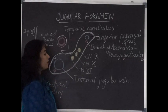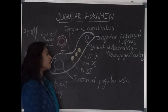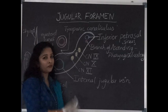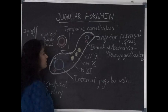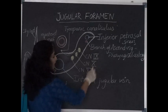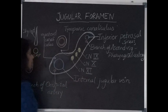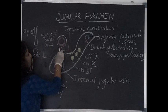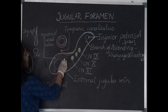From the intermediate compartment, it is called nervous compartment where three cranial nerves are passing and this is the only foramen where the three cranial nerves are passing. That is glossopharyngeal, ninth cranial, tenth is vagus and eleventh is spinal accessory.